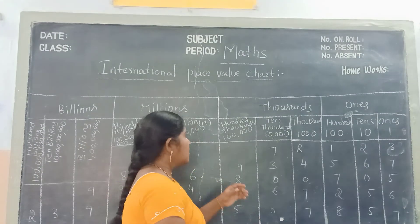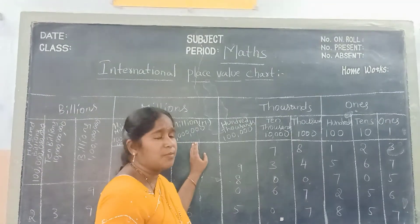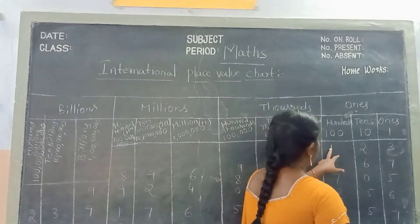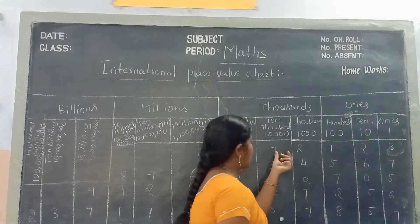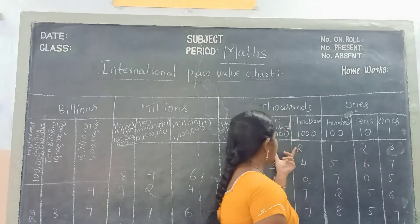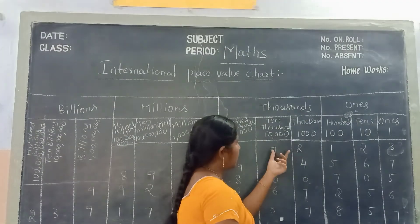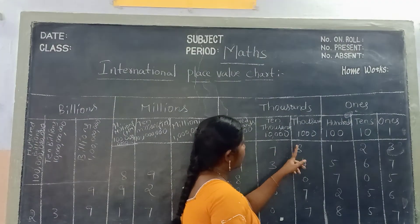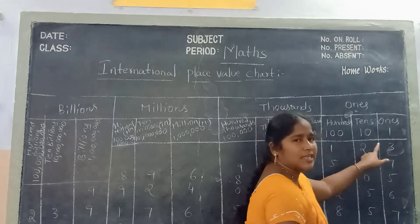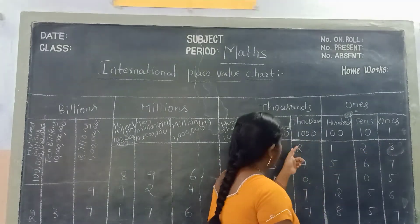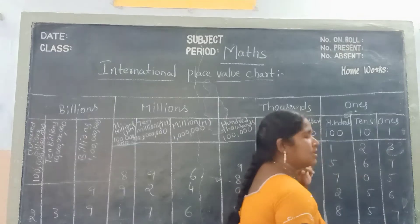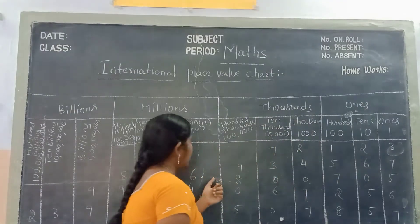See children, we are giving some examples. This example number — see children: 7, 8, 1, 2, 3. How to read this? Children: seventy-eight thousand one hundred and twenty-three.